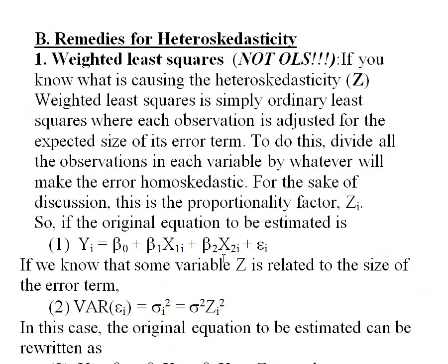Now, how do you fix heteroscedasticity? We've talked about how to detect it. There are a few ways. I'm going to quickly talk about a couple of approaches, and then talk about an easy way that's also pretty fancy but doesn't take a lot of thought or work. The first way is what's called weighted least squares, or generalized least squares.